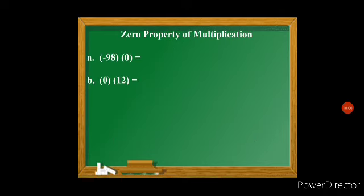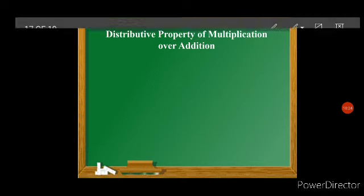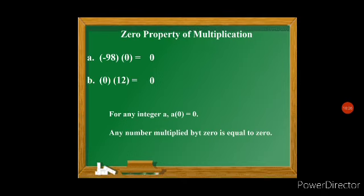The zero property of multiplication: negative 98 times 0 equals 0, and 0 times 12 equals 0. For any integer a, a times 0 equals 0 — any number multiplied by 0 is always 0. Even if you have a million, multiplying it by 0 gives 0.